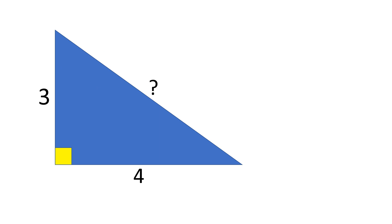Let's take this for example: a right triangle with the length of the legs 3 and 4, and the length of the hypotenuse is missing. So our task is to find the length of the hypotenuse given the length of the legs. To do that, let's use the Pythagorean theorem. That is: 3 squared plus 4 squared is equal to the missing hypotenuse, let's name it X. So X squared.